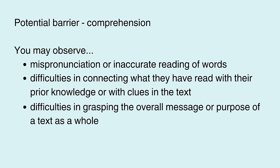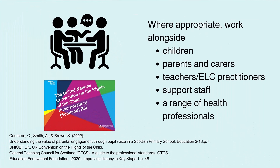The ultimate goal of reading is comprehension — the ability to understand what is read. Some children will decode words with ease but have difficulty in taking meaning from individual words, sentences or the text as a whole. At word level, children may mispronounce or inaccurately read words due to limited vocabulary or knowledge of grammar. Mispronunciations or inaccuracies indicate that a reader is not monitoring their own understanding as they progress through a text. At sentence level, a child may struggle to connect what they have read with their prior knowledge or with clues in the text needed to make inferences. At text level, children may find it challenging to grasp the overall message or purpose of a text if they have limited experience with different text types or the intended audience.